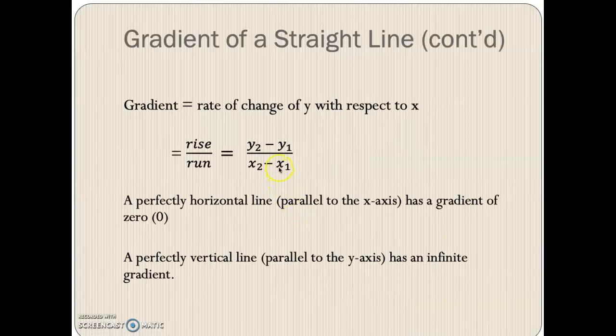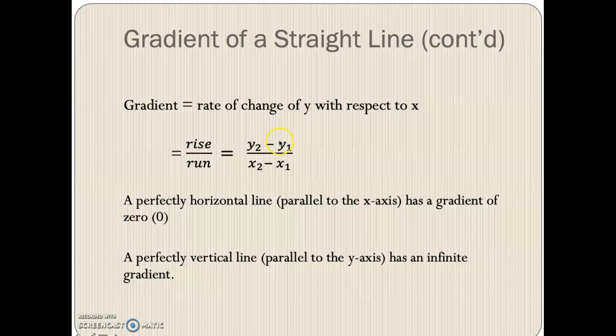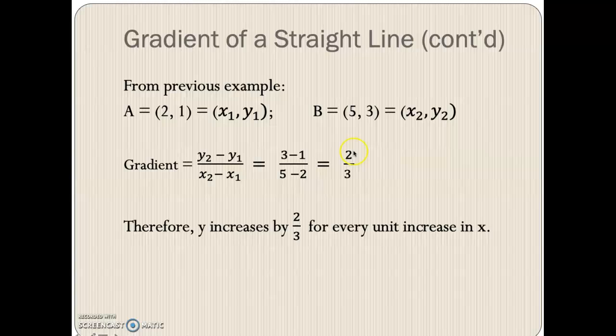So in our formula, the formula says the gradient is equal to rise over run, which is Y2 minus Y1 over X2 minus X1. So remember, Y2 is equal to 3 and Y1 is equal to 1. So 3 minus 1 gives 2. X2 is equal to 5. X1 is equal to 2. 5 minus 2 gives us 3. So we're saying the gradient of this line is 2 over 3. Interpretation, we're saying Y increases by 2 over 3 for every unit increase in X. That means Y will increase by 2 over 3 units every time X increases by 1 unit.